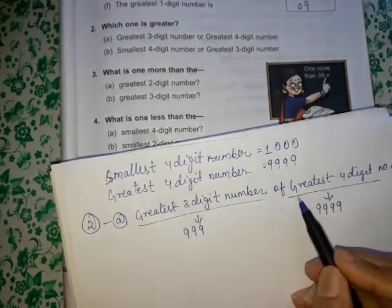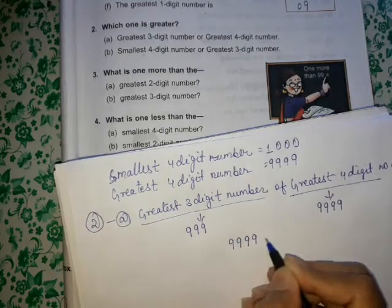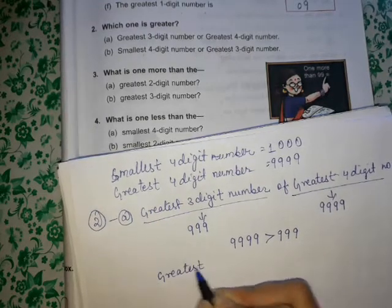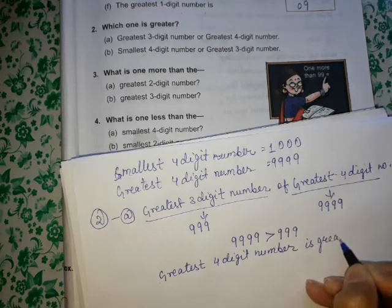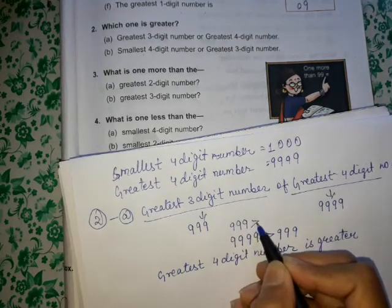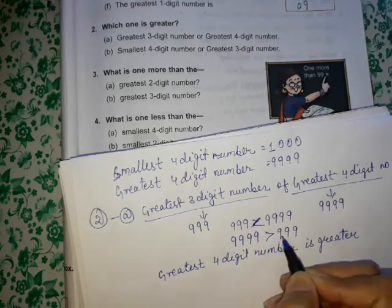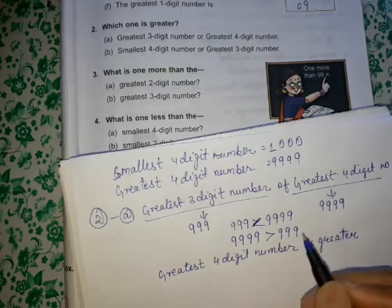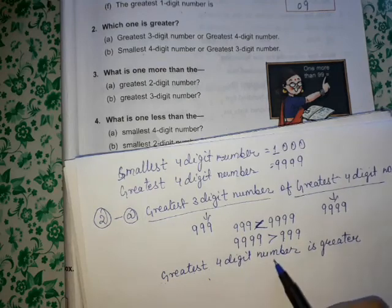9999 is greater than 999, so the greatest 4 digit number is greater. We can also write it as: 999 is smaller than 9999. The answer is: the greatest 4 digit number is greater.